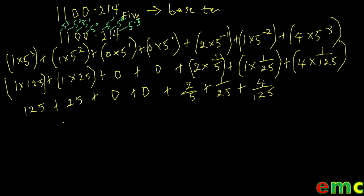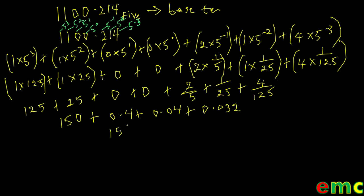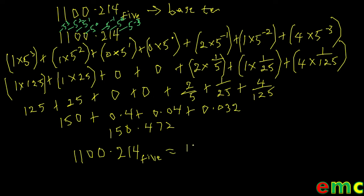This gives us 150 for the integer part. Converting the fractions to decimals: 2 over 5 gives 0.4, 1 over 25 gives 0.04, and 4 over 125 gives 0.032. Our final answer is 150.472. Therefore, 1100.214 in base 5 is equal to 150.472 in base 10.